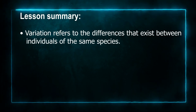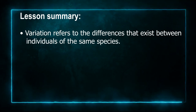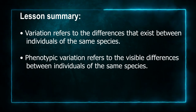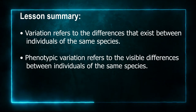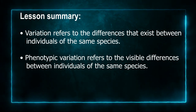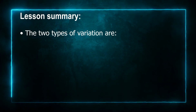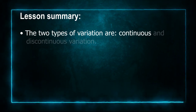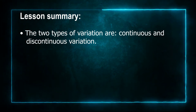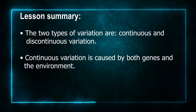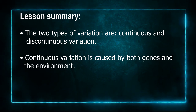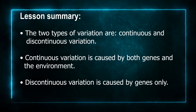Now that we've come to the end of today's lesson, let us review what we've learned about variation. Variation refers to the differences that exist between individuals of the same species. Phenotypic variation refers to the visible differences between individuals of the same species. There are two types of variation: continuous and discontinuous variation. Continuous variation is caused by both genes and the environment, while discontinuous variation is caused by genes only.